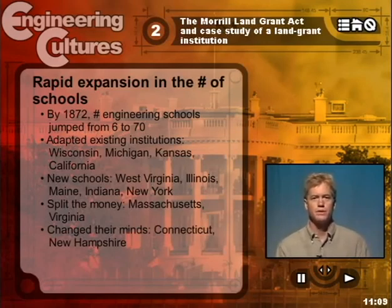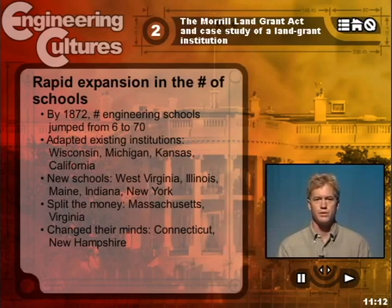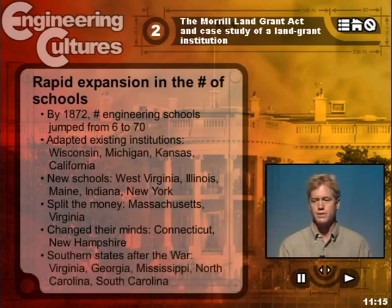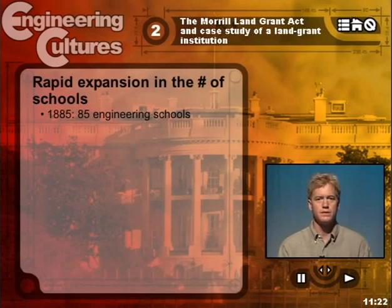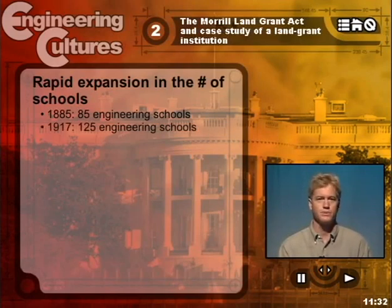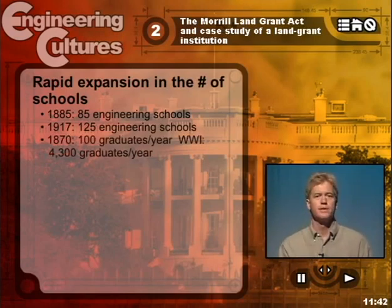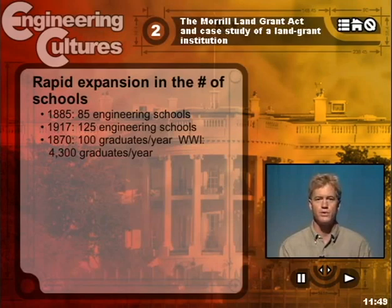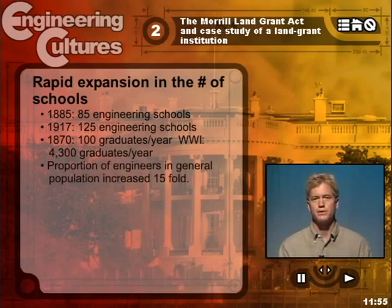After the conclusion of the Civil War, a number of southern states moved to add schools as well, including Virginia, Georgia, Mississippi, and North and South Carolina. By 1885, the number of schools offering engineering education with public support from states increased to 85. By 1917 — around World War I — there were 125 schools. The act played a key role in the expansion of engineering education. Between 1870 and World War I, the annual graduation rate in engineering increased from 100 students per year to 4,300 students per year, and the relative number of engineers in the population increased 15-fold.